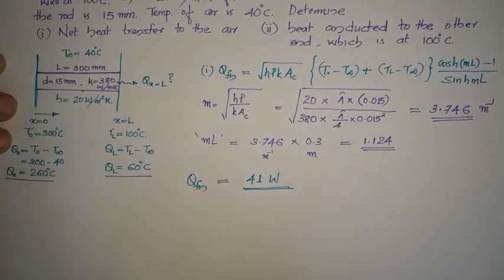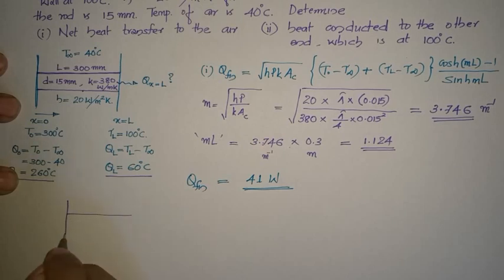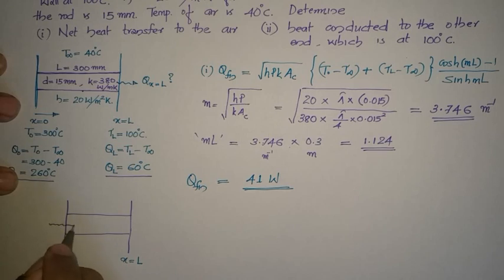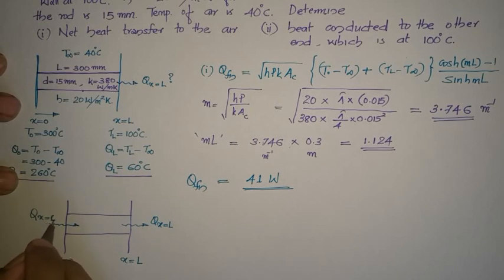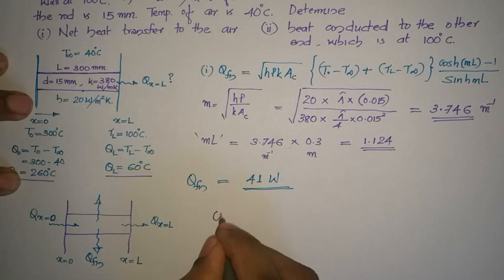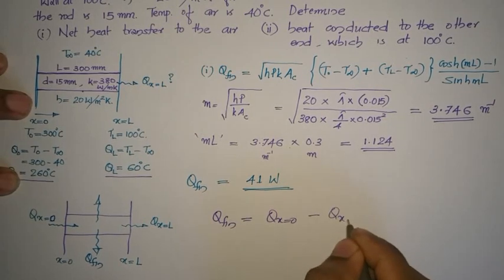Next, we evaluate the heat conducted to the other end. The fin is connected to two surfaces: one at x = 0 and the other at x = L. Heat is transferred at x = 0 (Q at x=0) and also to the other surface (Q at x=L). The difference between Q at x=0 and Q at x=L is the heat transferred to the surrounding air, so Q_fin = Q(x=0) − Q(x=L).